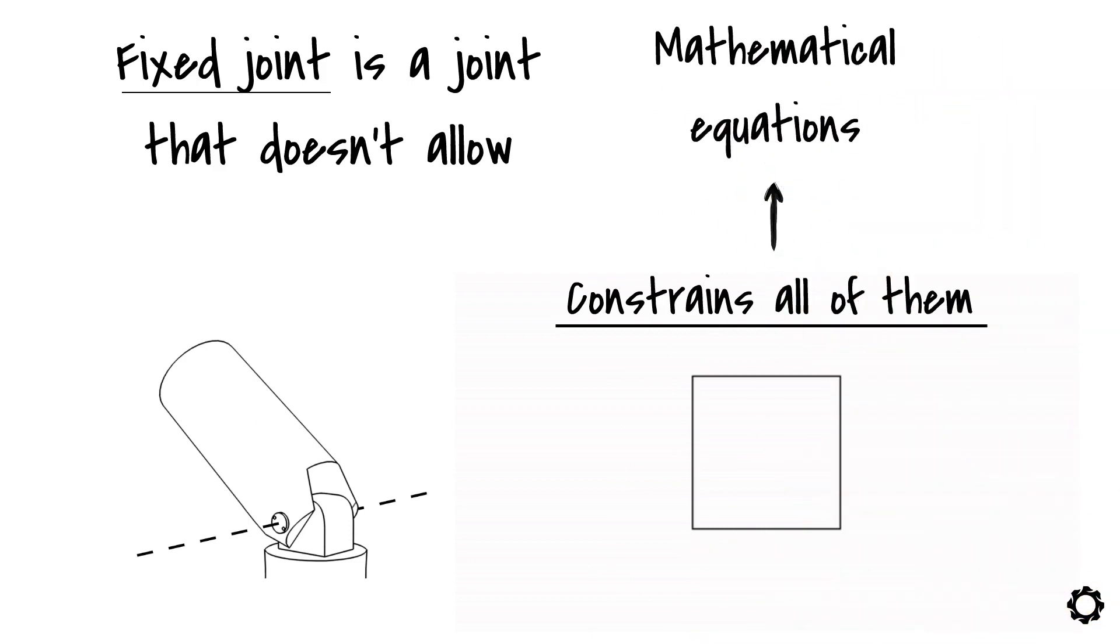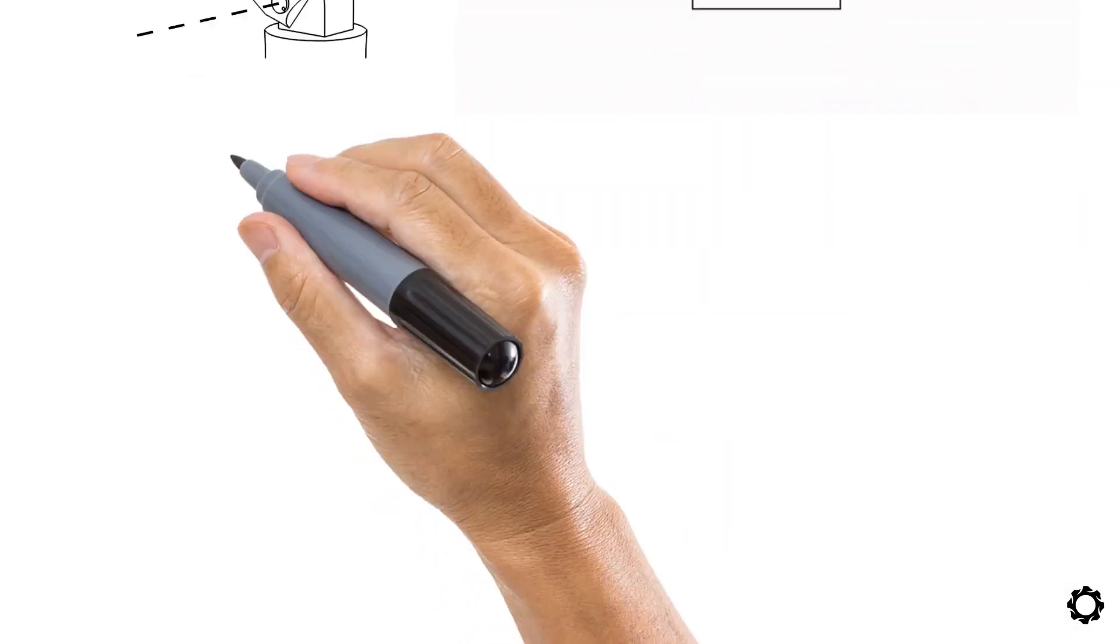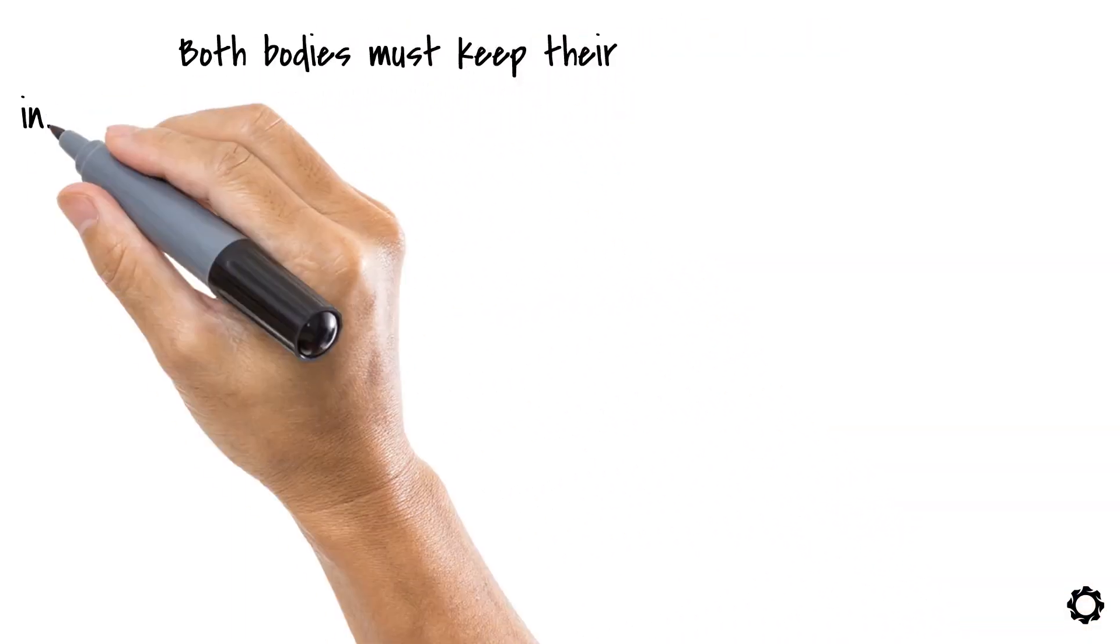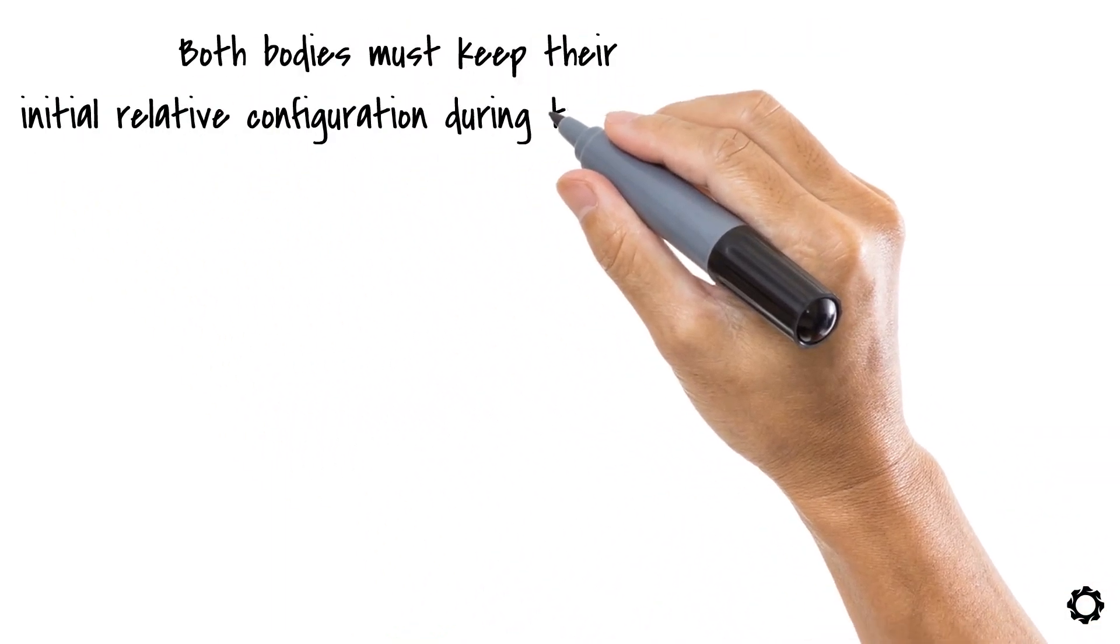If one body is not able to relatively rotate or translate with respect to the other body, this is equivalent to saying that both bodies must keep their initial relative configuration during the whole time.